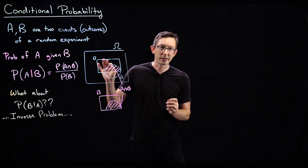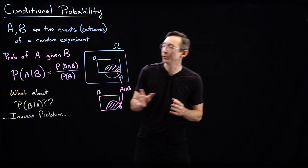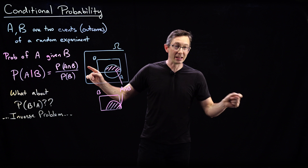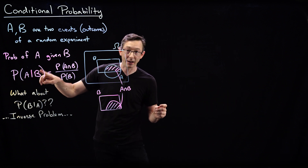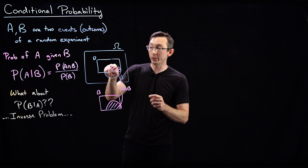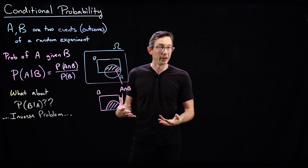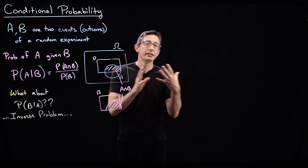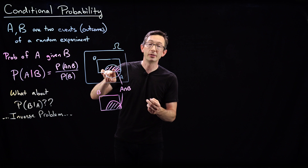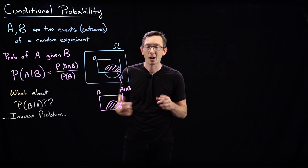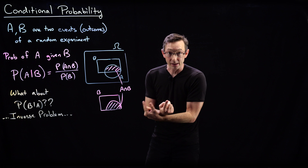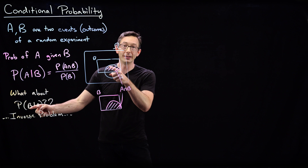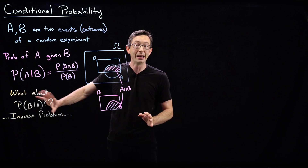Welcome back. We introduced the notion of conditional probability — how you can compute the probability of A if you know that some other event B happened. You compute the probability of A given B as the probability that both happen divided by the probability of B. This is one of the most useful ideas in probability: using partial information about event B to update your probability of event A. We also know that sometimes we want to do the inverse — estimating the probability of B given A — using Bayes' theorem, which we'll talk about in a minute.